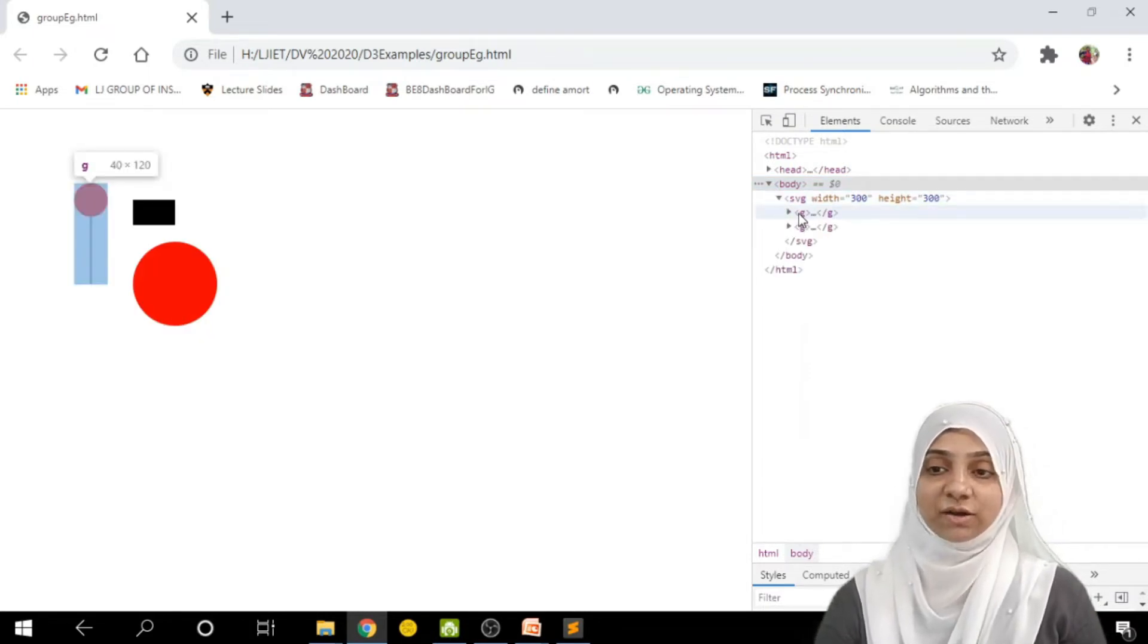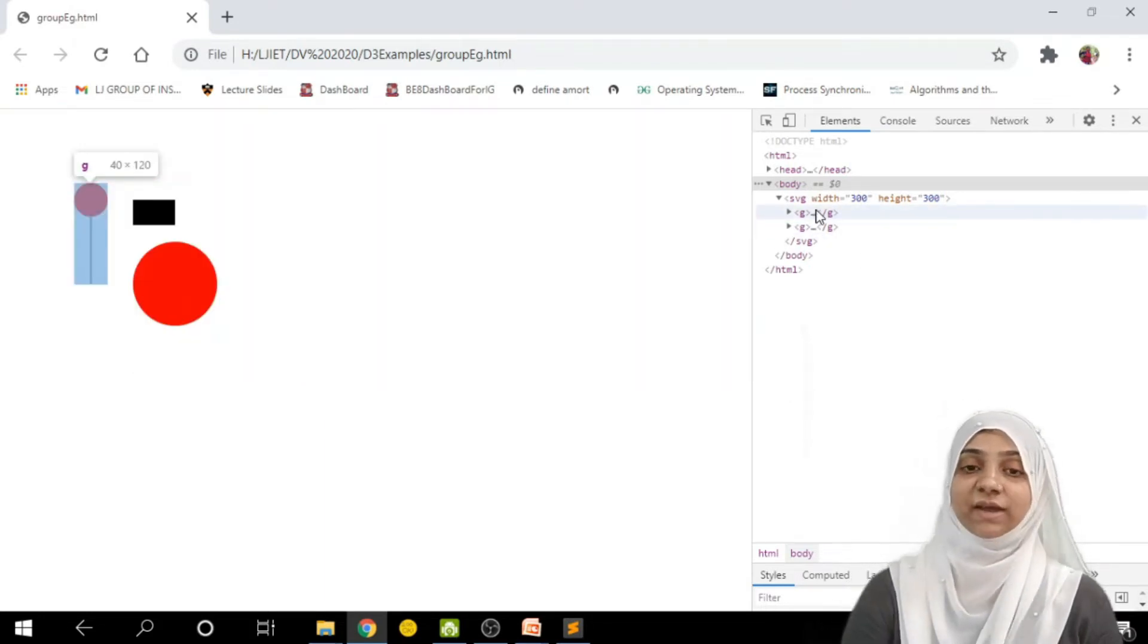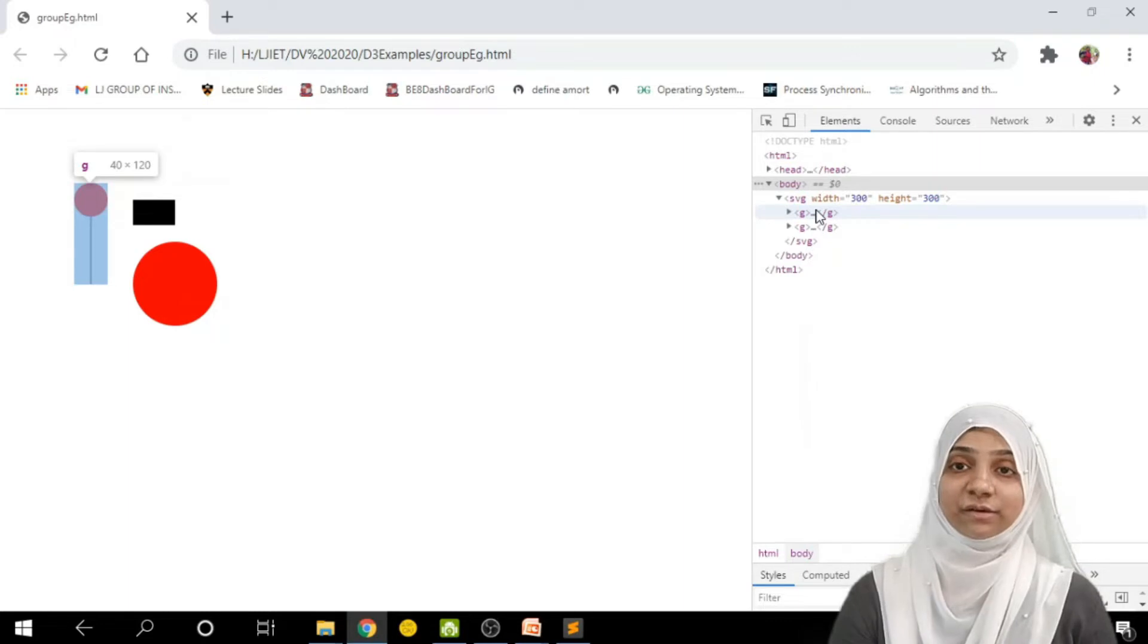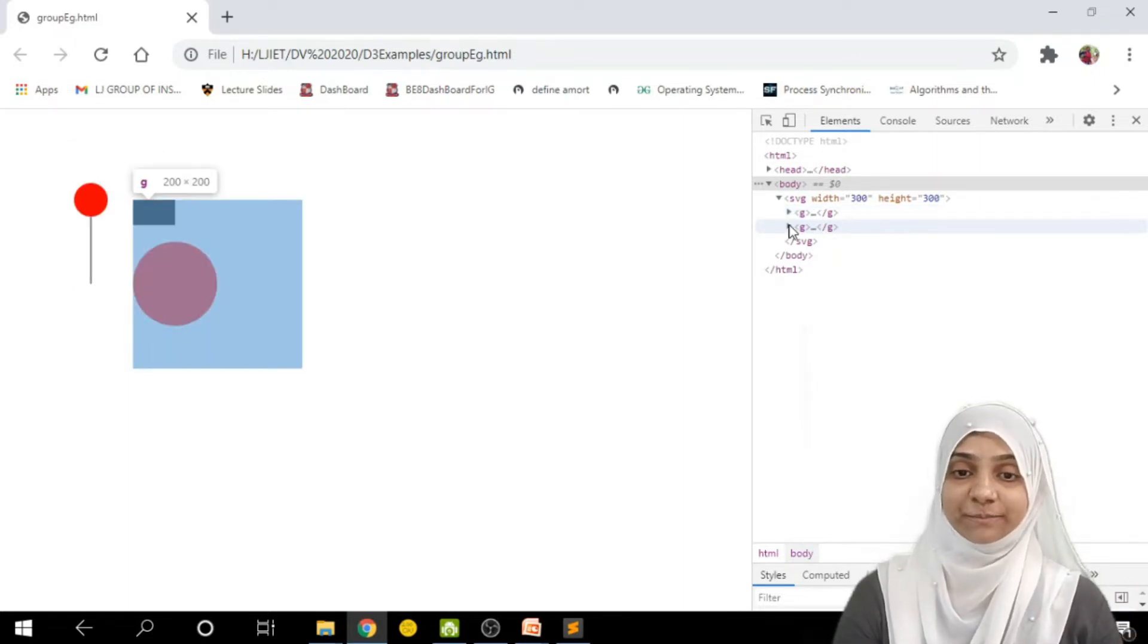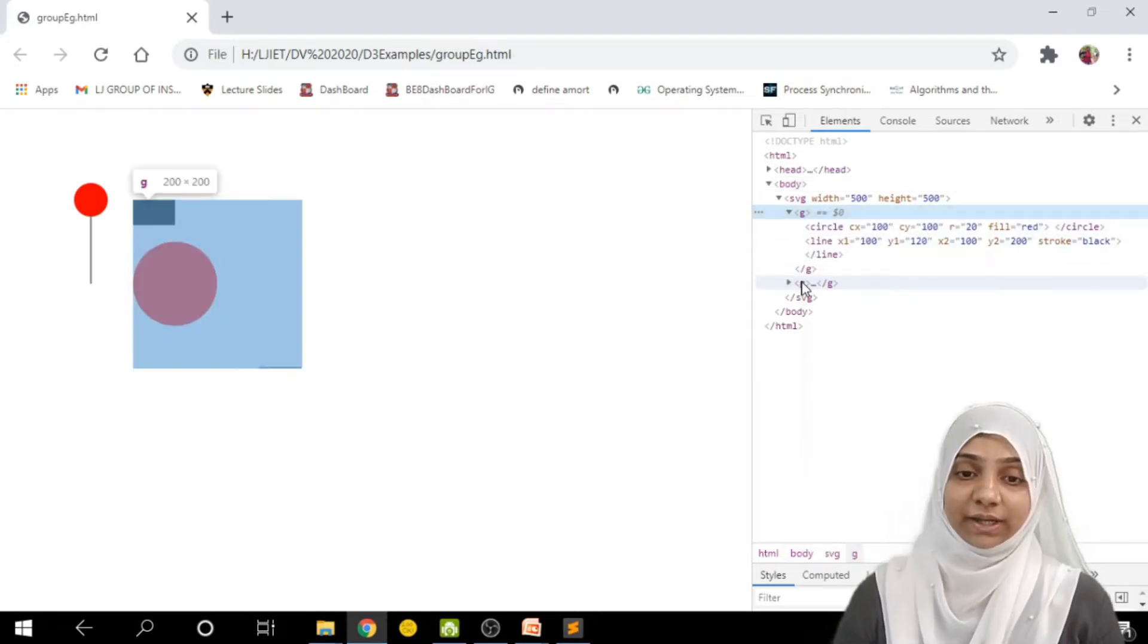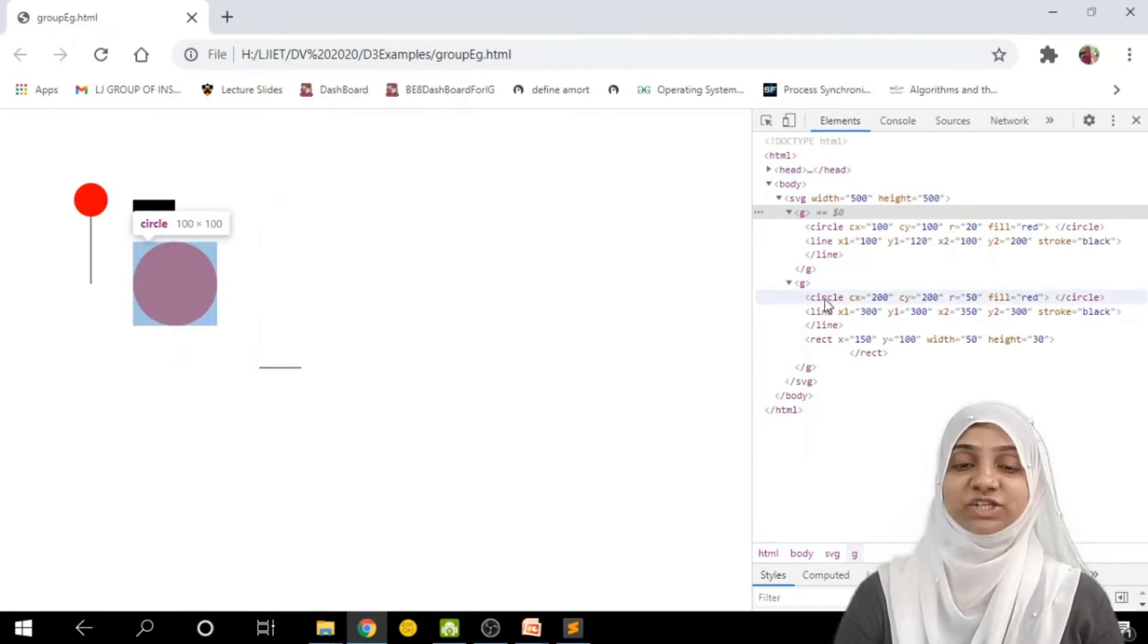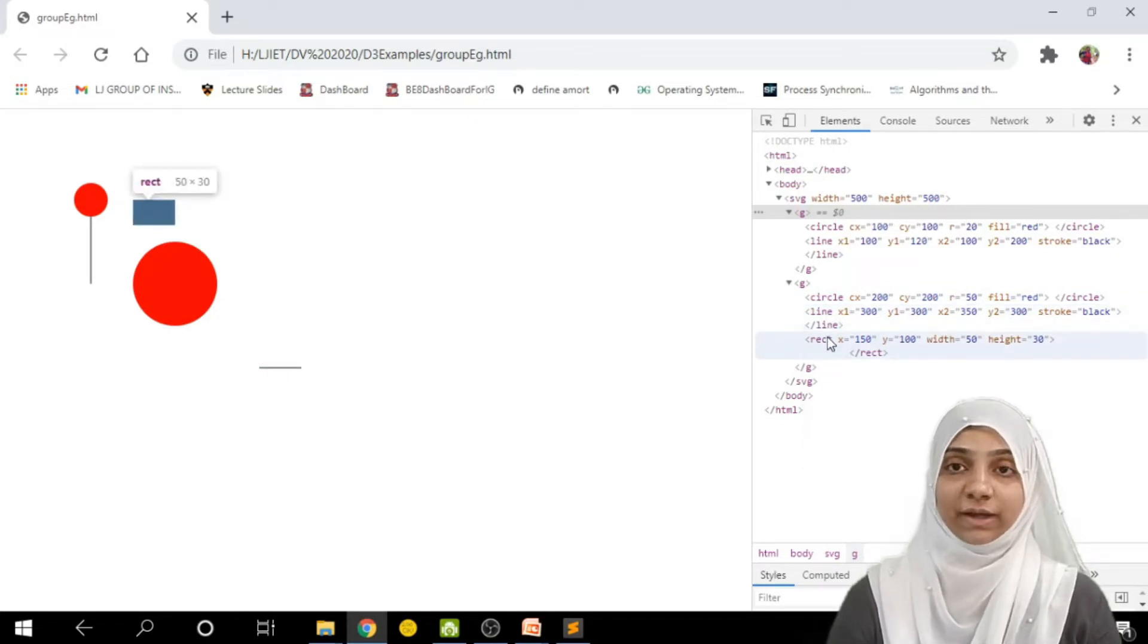If I select first the G tag or if I hover over a G tag, it is basically selecting circle and a line within it as a complete selection. When I select another G tag, it is selecting rectangle, circle and line in a single selection. As you can see, within another G tag, there is one circle, there is one line and one rectangle.